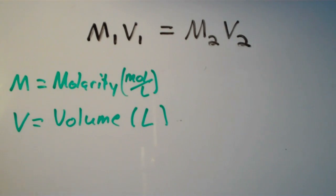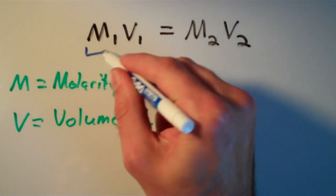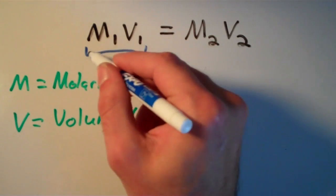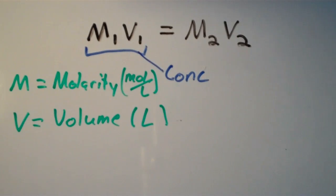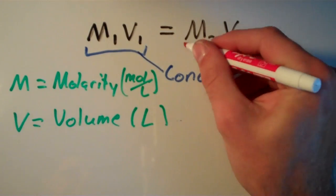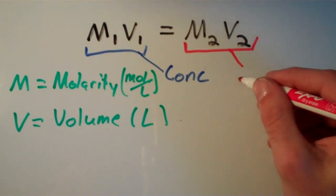So let's go over what M1 and V1 and M2 and V2 are. M1 and V1 apply to the concentrated solution, and M2 and V2 apply to the diluted solution.